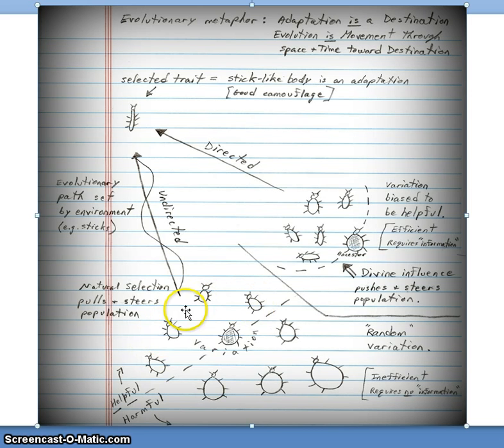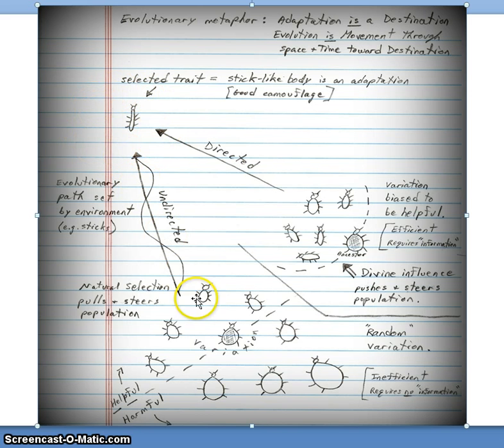If body shape is heritable, then those survivors with their useful traits are going to pass on that body shape to their next generation, some of which will be even thinner. Each generation, the thinnest individuals will have more babies, and that's going to pull the population over generations towards today's population of well-camouflaged, thin-bodied stick insects. Notice we're using that metaphor of natural selection pulling this population.